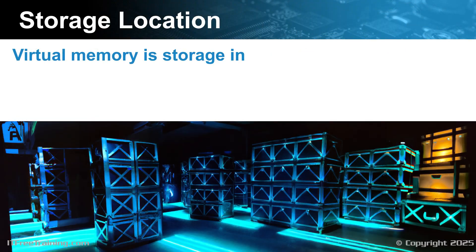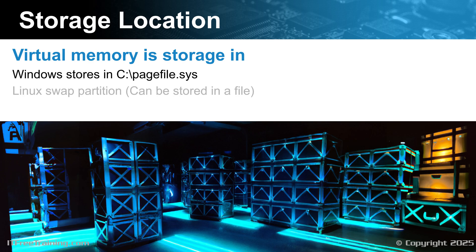Virtual memory is stored by default in Windows in the C drive in a file called PageFile.sys. On a Linux installation, it is generally stored in a partition designed for virtual memory called a swap partition, though it can be stored in a file if preferred. Using a swap partition is generally more efficient since the operating system can access the data directly. A partition will always be contiguous since it is one block of data; however, a file may be segmented, particularly if it expands in size. A swap partition can also bypass the cache and write directly to the partition, avoiding system overhead. Modern Linux operating systems are very efficient and you may not notice the difference between the two.